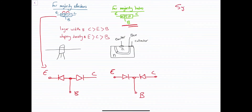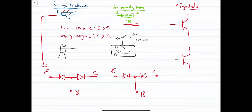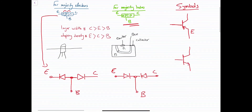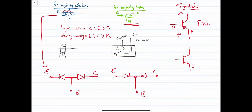Looking at the symbols of these transistors, we should look at the arrow. If the arrow is on this side, the emitter is always beside the arrow. So the arrow is pointing here toward the base, which means the arrow always points toward the negative layer. So if the base is negative, then the collector is positive and the emitter is positive — this type is a PNP type.